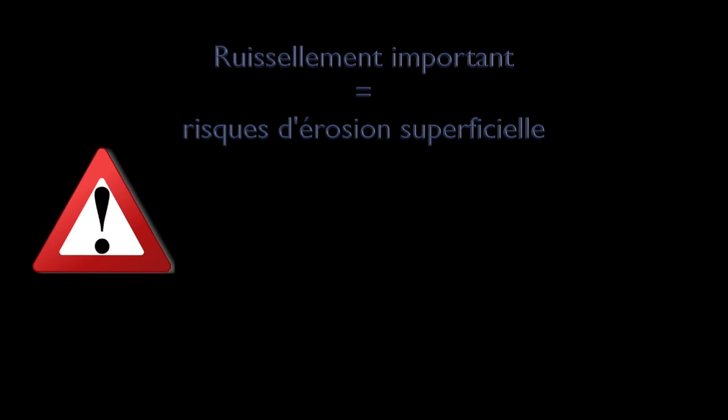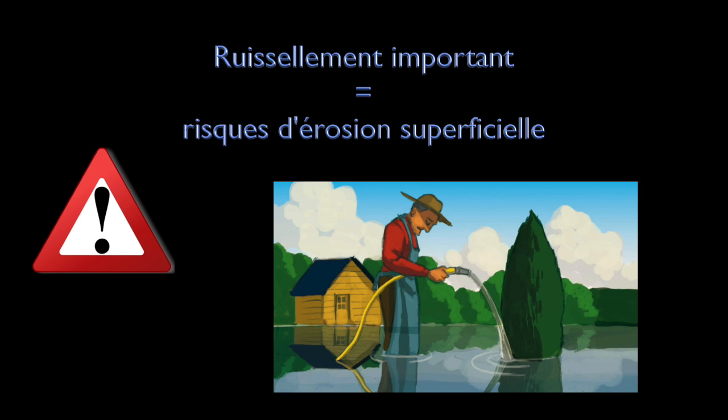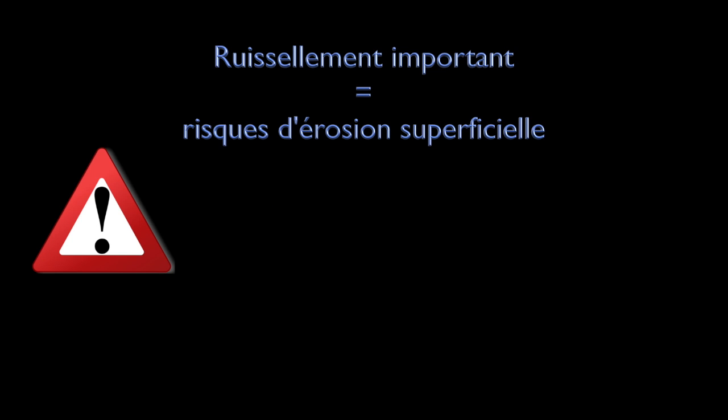Alors dans le cas de précipitations, disons un peu trop importantes, ou d'arrosage excessif, vous risquez d'avoir un ruissellement important, et avec ça, une érosion superficielle de votre sol.